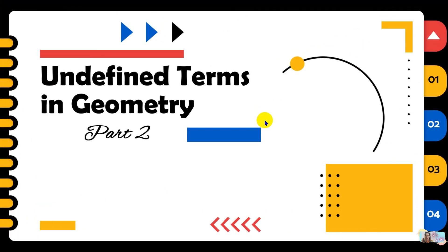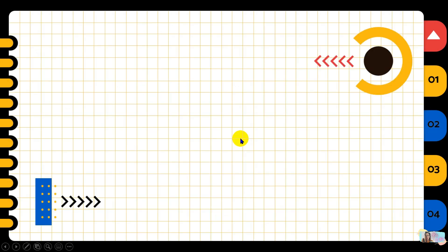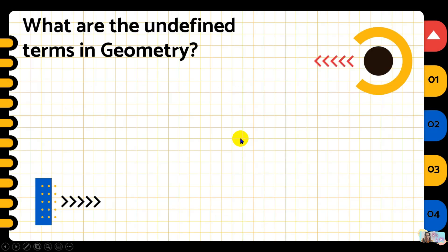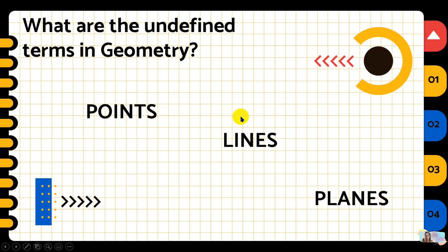Hi, good day! This is Ms. LM and we're back again for another math video. Today we're going to talk about undefined terms in geometry. This is the second part of this video. So again, what are the three undefined terms in geometry? They are points, lines, and planes.